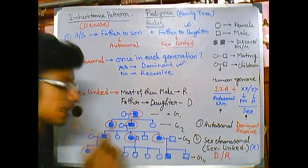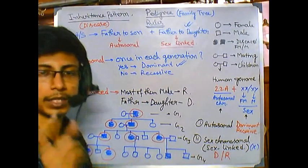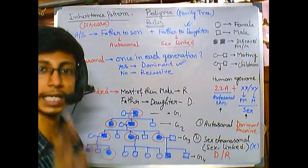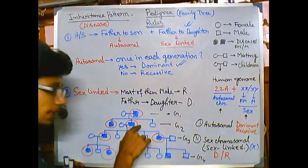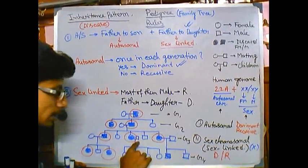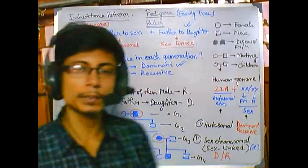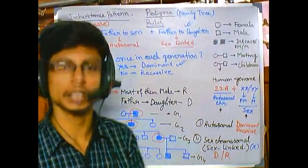Now if it is dominant, it must show the character, it must show the trait in each generation at least once. So you can see in generation 1 there is the trait, generation 2 there is the disease trait, generation 3 the disease, and generation 4 is also disease. So it is repeatedly showing itself in all the generations.